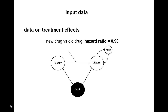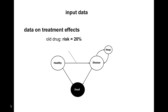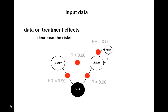The data on treatment effects consists of decreases of the transition risks for the new drug compared to the old drug. For example, regarding the risk of developing the disease, a hazard ratio of 0.90 is modeled for the new drug compared to the old drug. This means that whatever the risk is to develop the disease for individuals treated with the old drug, the risk is 10% lower for individuals treated with the new drug. With these decreases in transition risks, the cohort treated with the new drug will develop disease, get hospitalized, and die to a lesser extent, resulting in greater health effects — that is, more QALYs.